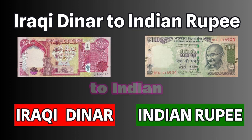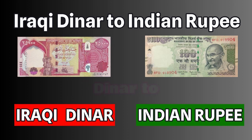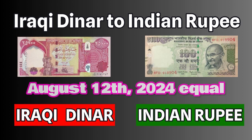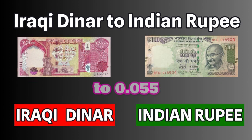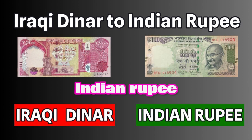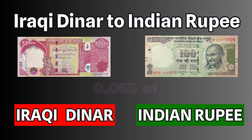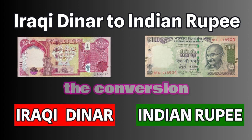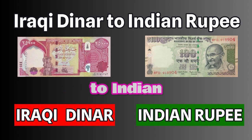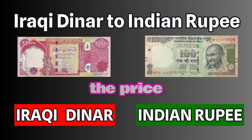Exchange Rate Iraqi Dinar to Indian Rupee. The price of Iraqi dinar to Indian rupee today, Monday, August 12, 2024, is equal to 0.055. That is, 1 Indian rupee is equal to 0.055 of Iraqi dinar. The conversion rate of Iraqi dinar to Indian rupee is 0.055.